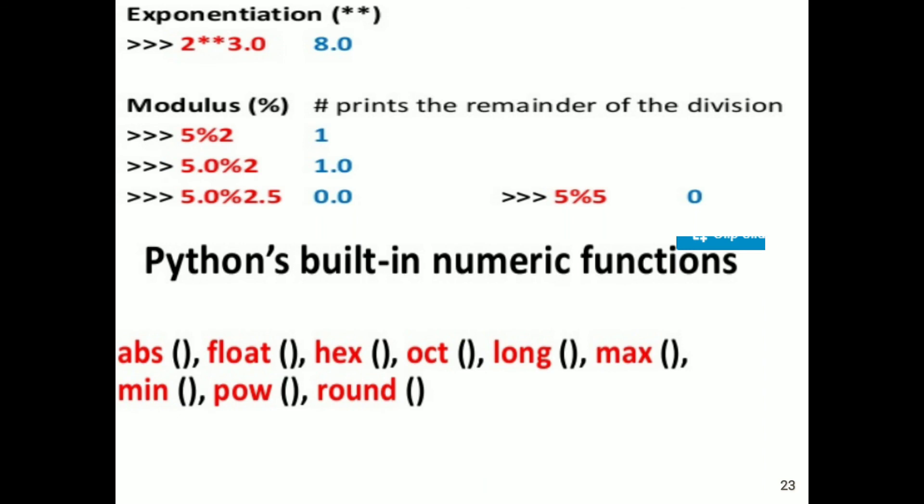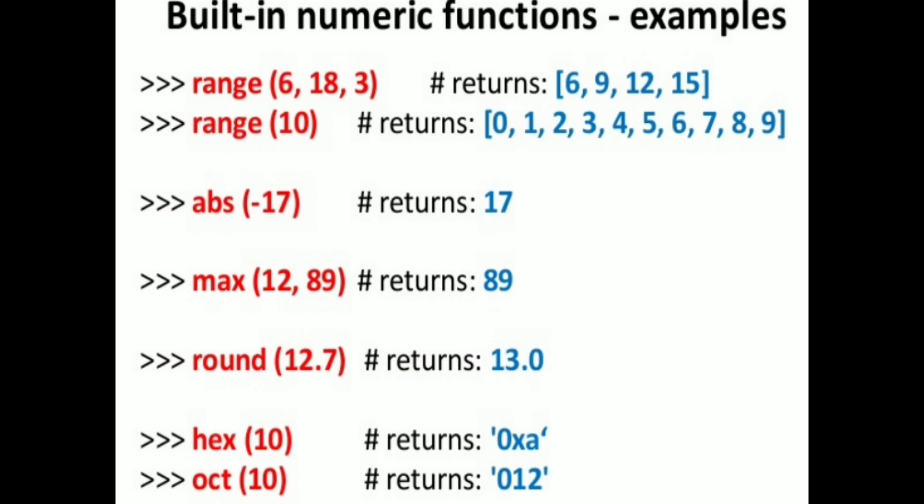Python's built-in numeric functions include: abs, float, hex, oct, long, max, min, power, and round. The range function — for example, range(6, 18, 3) returns numbers between 6 and 18 that are divisible by 3. The answer is 6, 9, 12, 15.